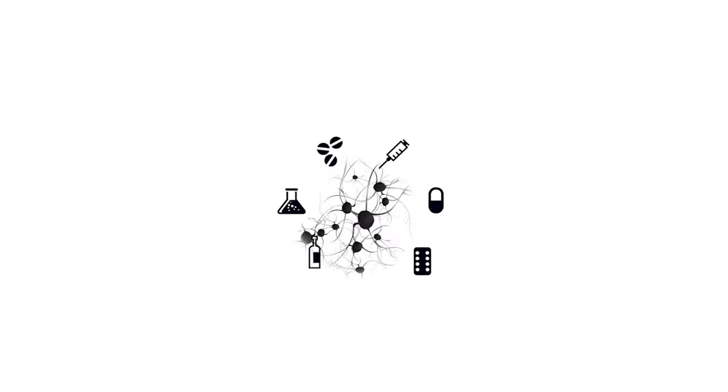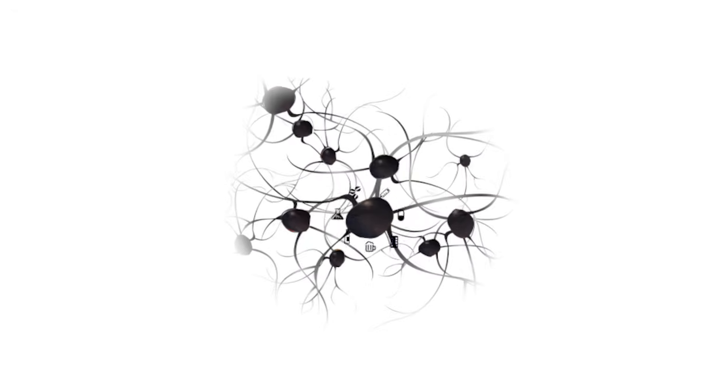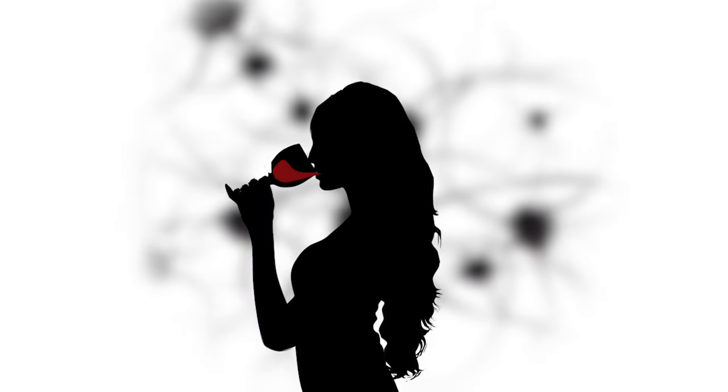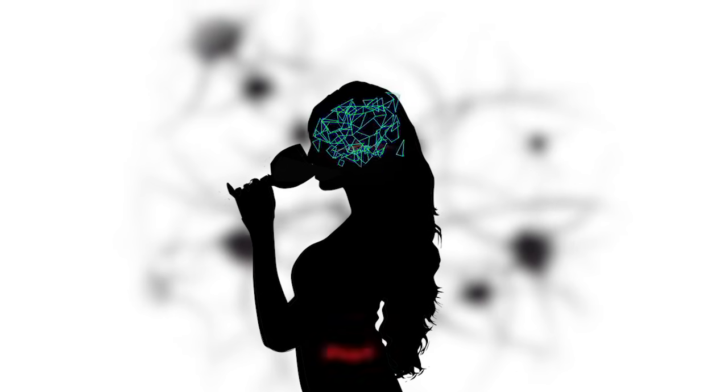So when drugs and alcohol are first administered into the system, there's a large surge of a neurotransmitter called dopamine. Now dopamine is primarily responsible for a lot of your cognitive functions, movement, and some senses of euphoria, but not to the scale of when you're actually using drugs or alcohol.